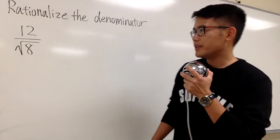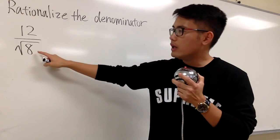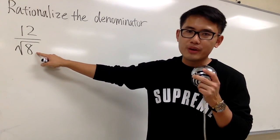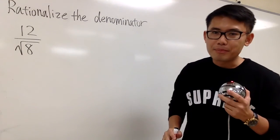We are going to rationalize the denominator for 12 over square root of 8, and we know 8 is not a perfect square. Therefore, square root of 8 is an irrational number.